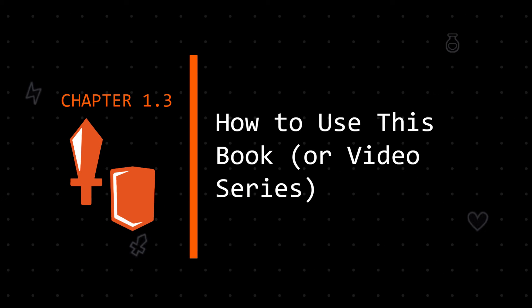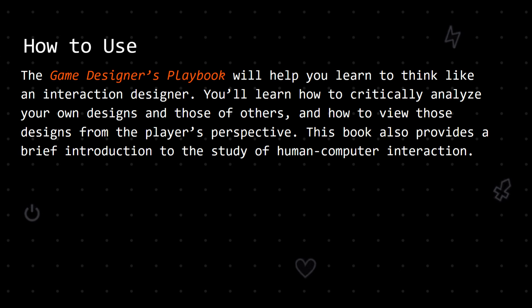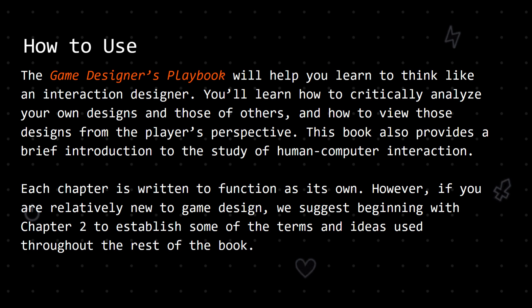How to use this book or video series. The Game Designer's Playbook will help you learn to think like an interaction designer, following a user-centric ethos. You'll learn how to critically analyze your own designs and those of others, and how to view those designs from the player's perspective. This book also provides a brief introduction to the study of human-computer interaction, and how to apply general design standards to the task of crafting game interactions. Each chapter is written to function as its own, with no particular background from prior chapters necessary for understanding. However, if you are relatively new to game design, we suggest beginning with chapter 2 to establish some of the terms and ideas used throughout the rest of the book.